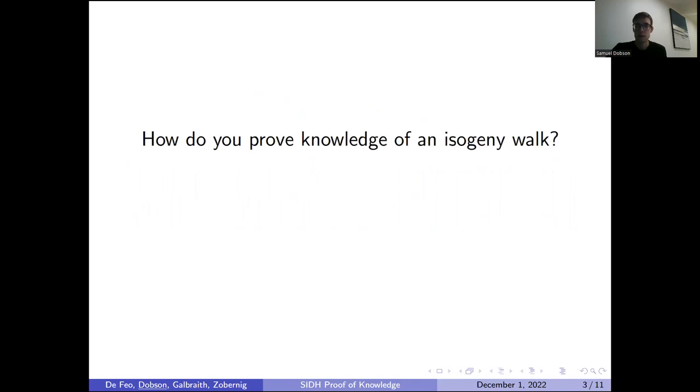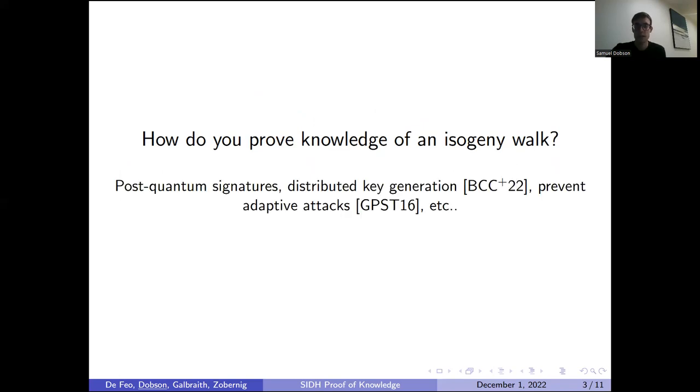The natural question then arising is how do you prove knowledge of such an isogeny if you're only going to give out the two curves? This has natural applications in signatures, distributed key generation to prevent adaptive attacks, and so on.